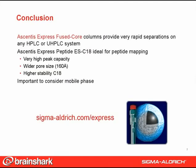Ascentus Express fused core columns are well known for providing very rapid, highly efficient separations on any HPLC or UHPLC system. The examples shown here for peptide mapping demonstrated the benefit of high efficiency to generate high peak capacity, giving more information from the HPLC experiment. Ascentus Express Peptide ESC18 has high peak capacity, but also wider pores and a more stable bonding chemistry for low pH peptide separations. It is also important to consider the mobile phase and choose ion pair additives and pH to maximize detector sensitivity and peak shape.